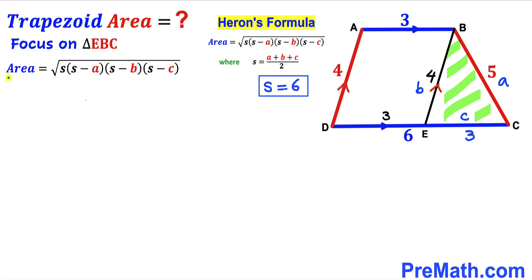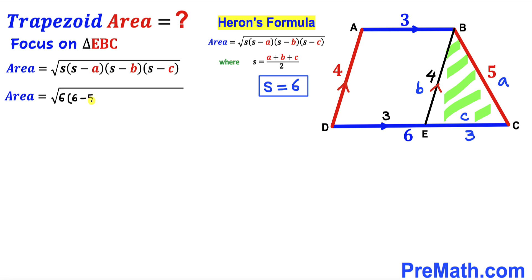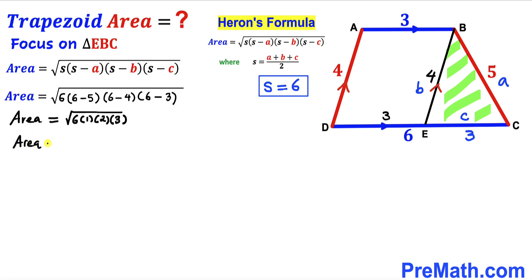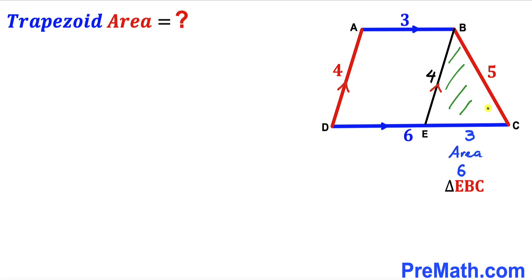Now we calculate the area of triangle EBC by substituting s=6, a=5, b=4, c=3 into Heron's formula. We get the square root of 6×(6−5)×(6−4)×(6−3), which is the square root of 6×1×2×3, equaling the square root of 36. Therefore the area of triangle EBC is 6 square units.